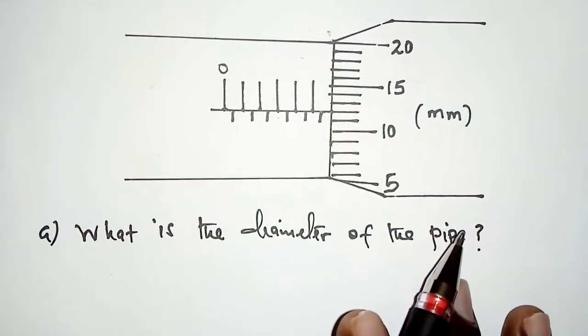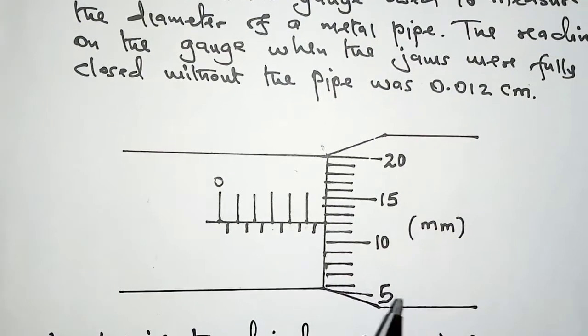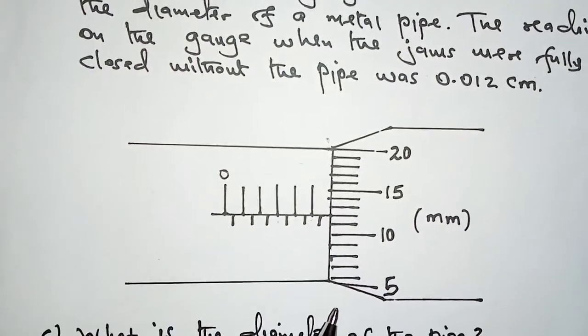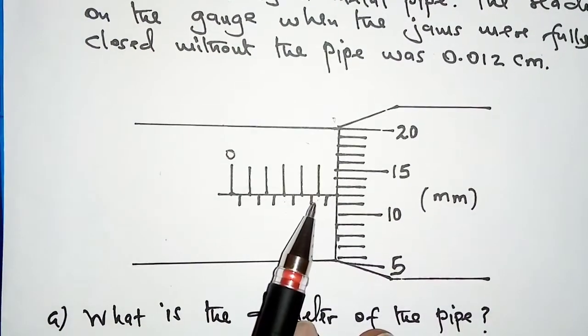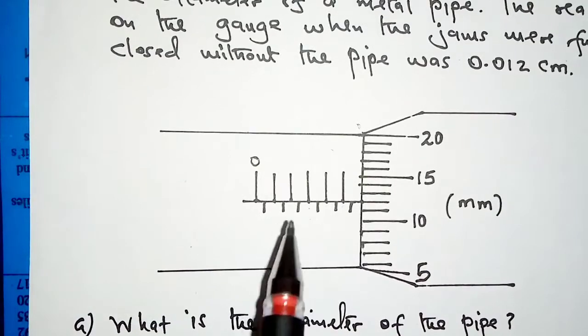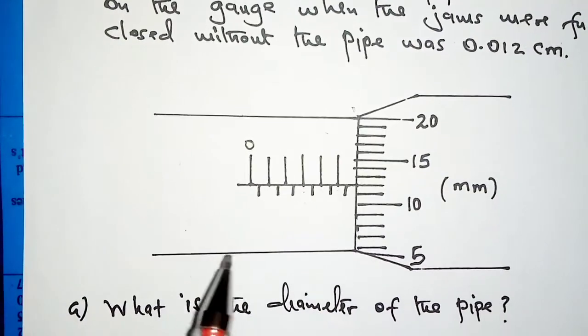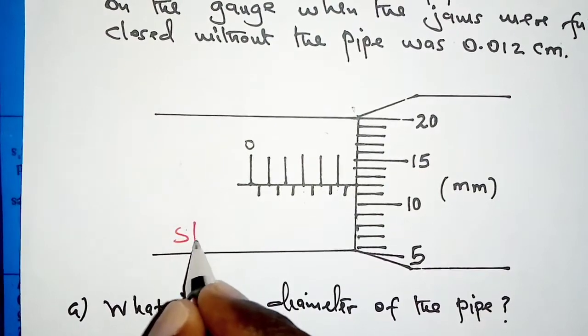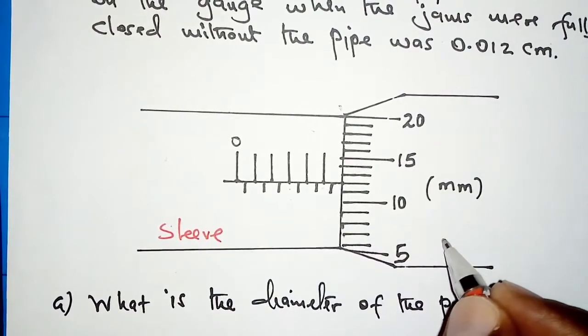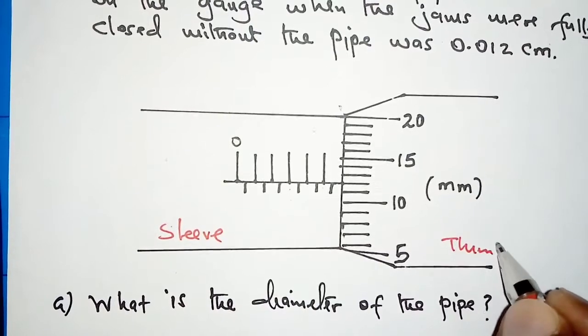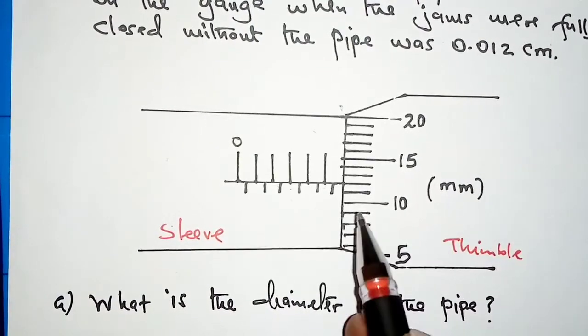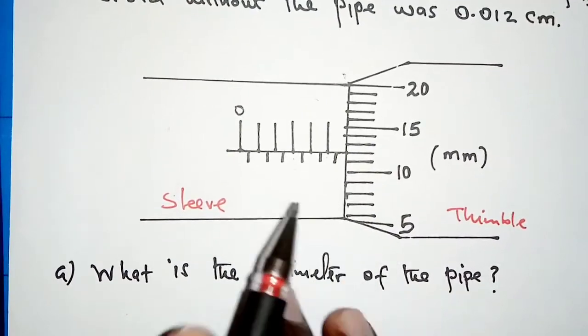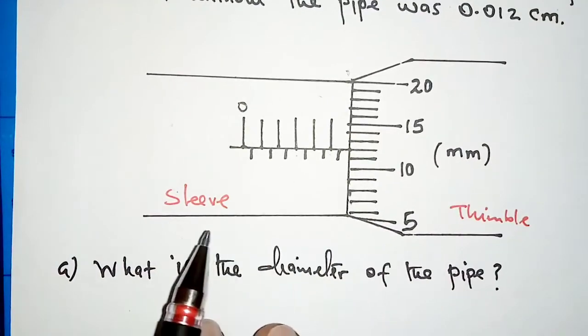What is the diameter of the pipe? In other words, we are asked to read the scale provided here. For a micrometer screw gauge, we have these two parts that contain the scale. This part here is called the sleeve and this part here is called the thimble. The scale on the thimble is the thimble scale and the scale on the sleeve is the sleeve scale.